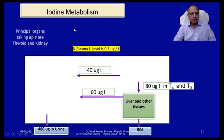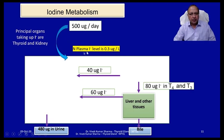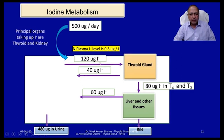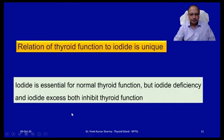The principal organs that take up iodide are the thyroid, kidney, and liver. Of the daily intake of roughly 500 micrograms, 120 micrograms of iodide is taken up by the thyroid gland, of which 80 micrograms is utilized for synthesis of thyroid hormones. After metabolic activity, it is secreted in bile or urine — nearly 480 micrograms is excreted in urine. Importantly, both iodide deficiency and iodide excess will inhibit thyroid function, making their relationship unique.